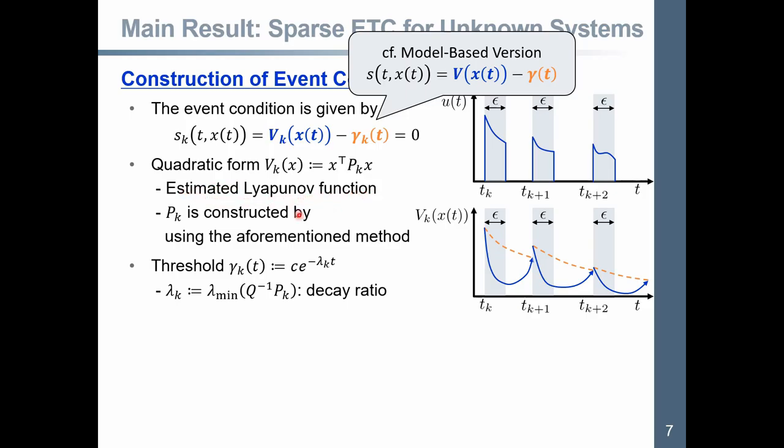Now, V and gamma are changed into Vk and gamma k. The function Vk is the estimated Lyapunov function, and this matrix, the estimation matrix sequence, is constructed by using the aforementioned method. On the contrary, gamma k is the threshold and is determined by Pk like this.